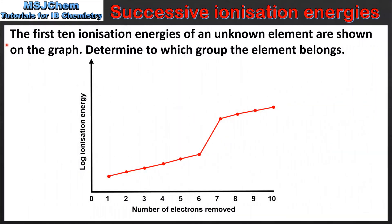Let's end the video with a question. The first 10 ionization energies of an unknown element are shown on the graph. Determine to which group the element belongs. From the graph we can see that the large increase in ionization energy occurs after the 6th ionization. This tells us that the element has 6 valence electrons, and therefore the element belongs in group 16 of the periodic table.